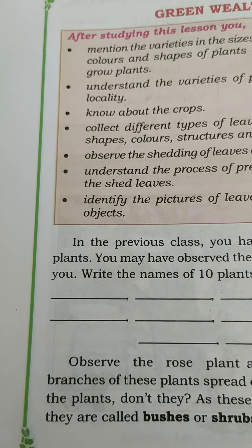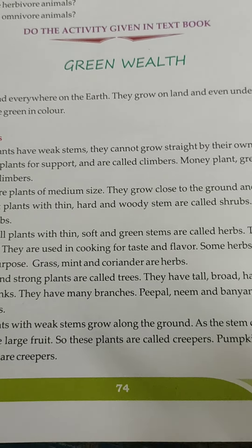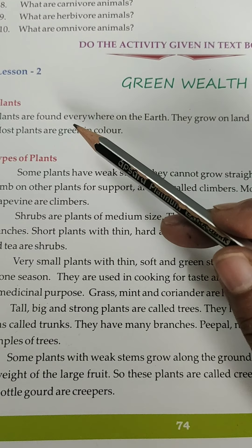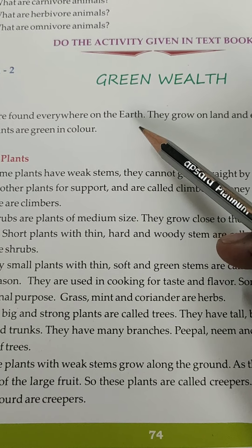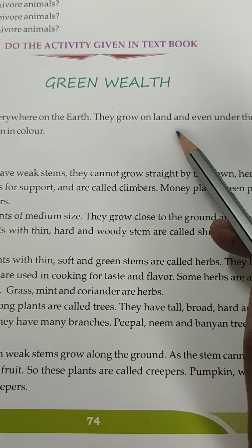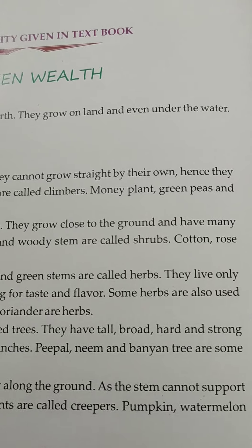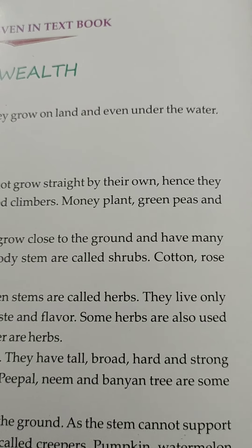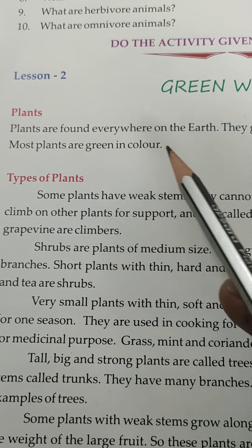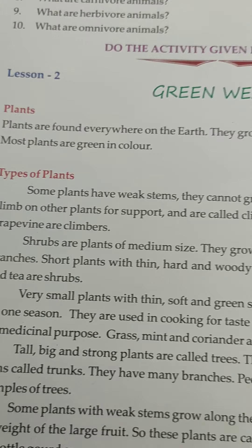Children, open your Vidyanjali textbook, page number 74. Plants. Plants are found everywhere on the earth. They grow on land and even under the water. Most plants are green in color. They grow on the earth.